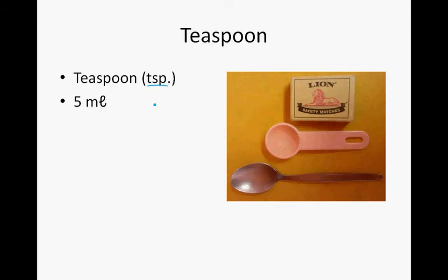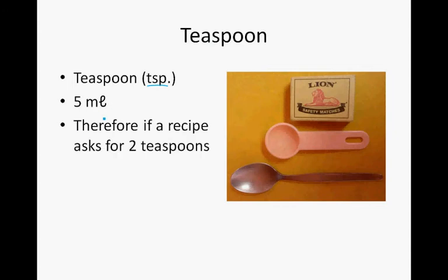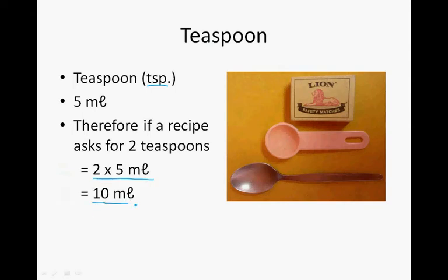A teaspoon's capacity is 5 milliliters. Therefore, if a recipe asks for 2 teaspoons, the recipe asks for 2 times 5 milliliters, and that is equal to 10 milliliters.